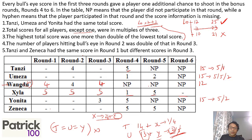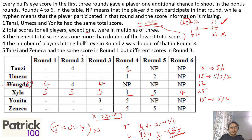But Zyla has already scored 5, 5, 5, 5, and 1 — that's already 21 — so Zyla's score is 21 plus something, meaning the highest score must be more than 21. So the case of 10 and 21 is not possible. The only possible case is 12 and 25. Wangdu must have scored 4, 4, 4 in all three rounds. The highest score is 25, and the only way to get 25 is Zyla scoring 4 in her last bonus round.